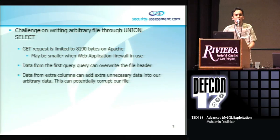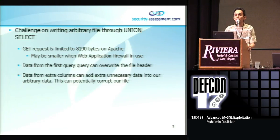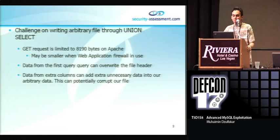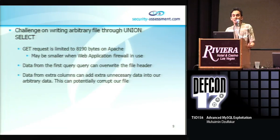If the application does not support stack queries, the only method to write a file is through UNION SELECT. There are some challenges in writing an arbitrary file through UNION SELECT. First, the GET request only limits us to up to 8,190 bytes on Apache. Also, data from the first query can override our file header. Finally, data from extra columns can add unnecessary data into our arbitrary file, potentially corrupting it.